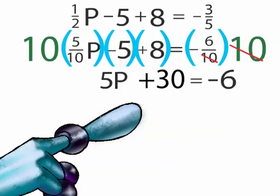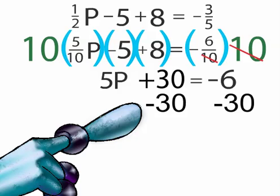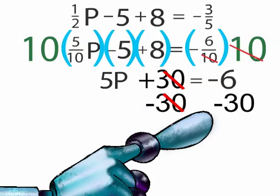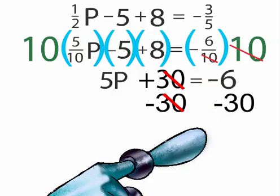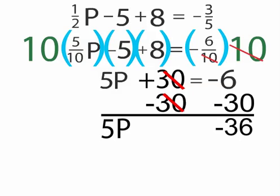To get rid of the 30, we can subtract 30 from both sides. The two 30's cancel out on one side. On the other side, negative 30 plus negative 6 equals negative 36. Our equation now reads, 5P equals negative 36.